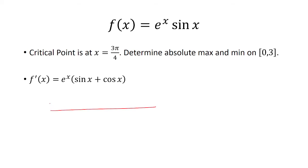So we want to use a number line. So we want to stop from 0 to 3, and our critical point here was 3 pi over 4. So you want to pick a number between 0 and 3 pi over 4. Let's say pi over 2. Pick a number between 3 pi over 4 and 3. Let's say pi.